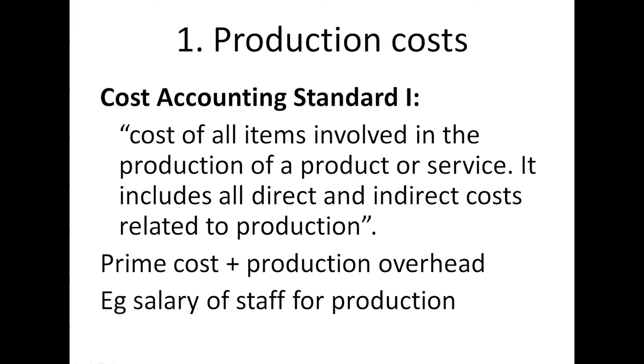First one: production cost. In a manufacturing concern, while producing a product, whatever cost is incurred in a factory comes under production cost. As per the definition given by cost accounting standard one, it is the cost of all items involved in the production of a product or service, including all direct and indirect costs related to production. It includes prime cost plus production overhead.